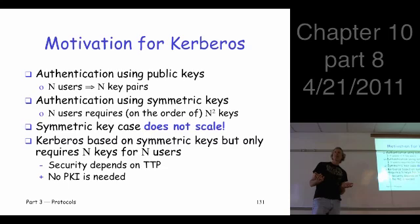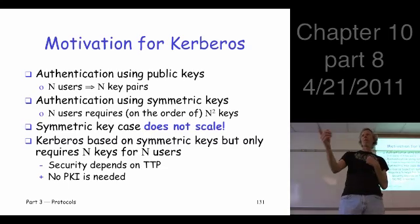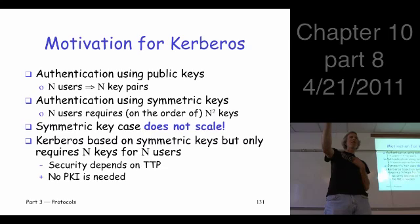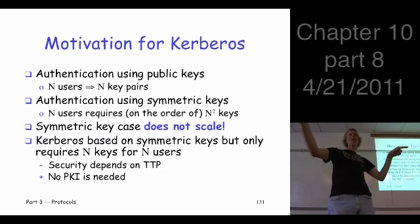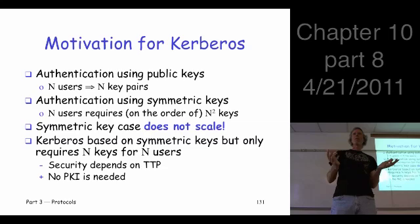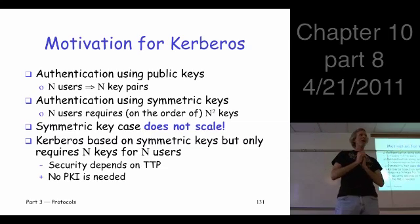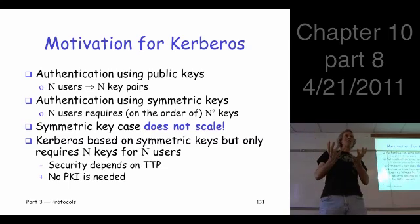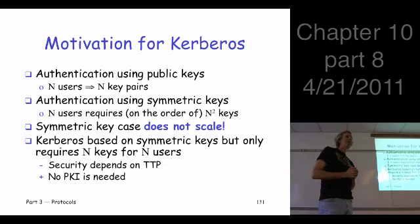Now how about symmetric keys? If I want anybody to be able to authenticate anybody else, I have to share a key with everybody. That means the number of keys is n-choose-2, roughly n-squared. So it's growing like n-squared, which is pretty bad if you have a billion users. It doesn't scale the way public keys do.